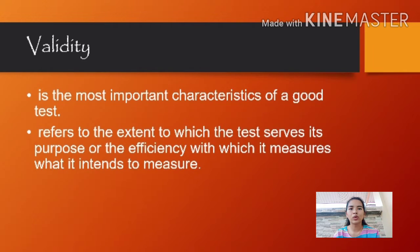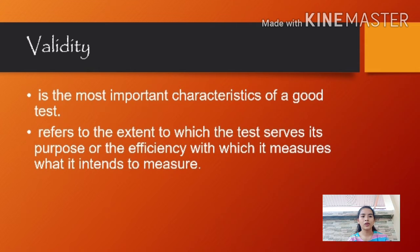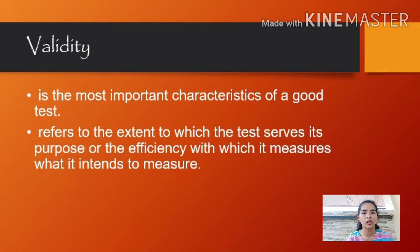Validity refers to the extent to which the test serves its purpose, or the efficiency with which it measures what it tends to measure. It is the most important characteristic of a good test. Validity also refers to the accuracy of the measurement and shows how a specific test is suitable for a particular situation. If the results are accurate according to the researcher's situation, explanation, and prediction, then the research is valid. If the method of measuring is accurate, then it will produce accurate results.